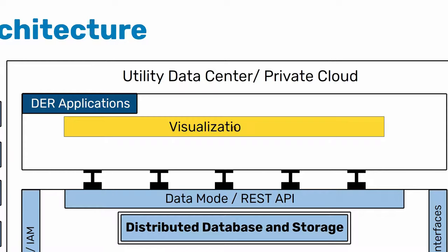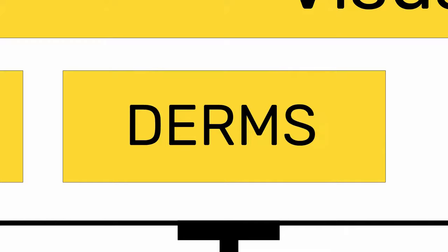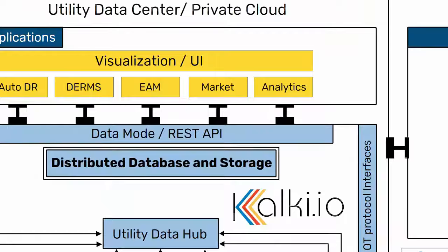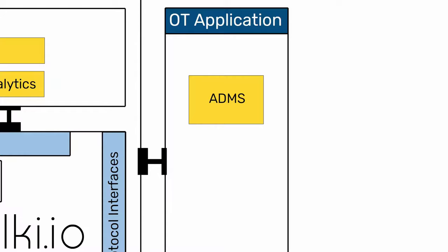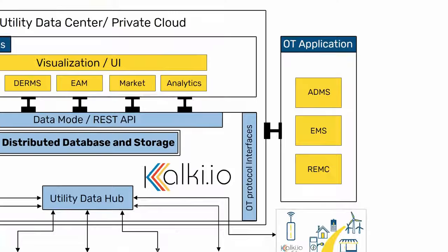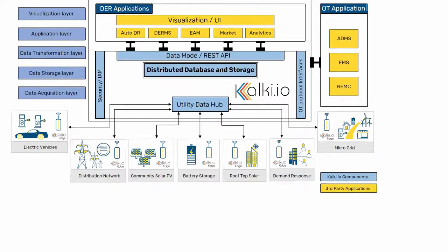Kolki.io data hub also has connectors to plug in third-party applications like automated demand response, DERMS, enterprise asset management, market applications, and analytics applications as required. At the same time, data can be shared with legacy OT systems such as SCADA, ADMS, and EMS over native OT protocols such as IEC 104, DNP3, ICCP, or CIM.